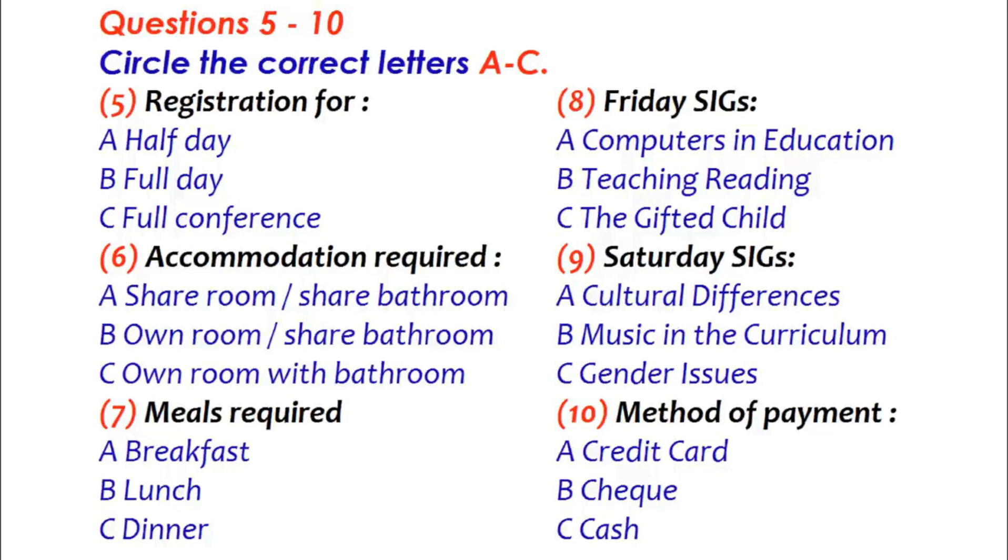OK. Now, do you want to attend all three days? The conference runs from Thursday to Saturday. Yes, I think so. If I can afford it. What does it cost? Well, you're eligible for a student discount, which makes it $15 for a day registration or $40 for the three days, though it is possible to register for half a day only. I'll register for all three days, please.